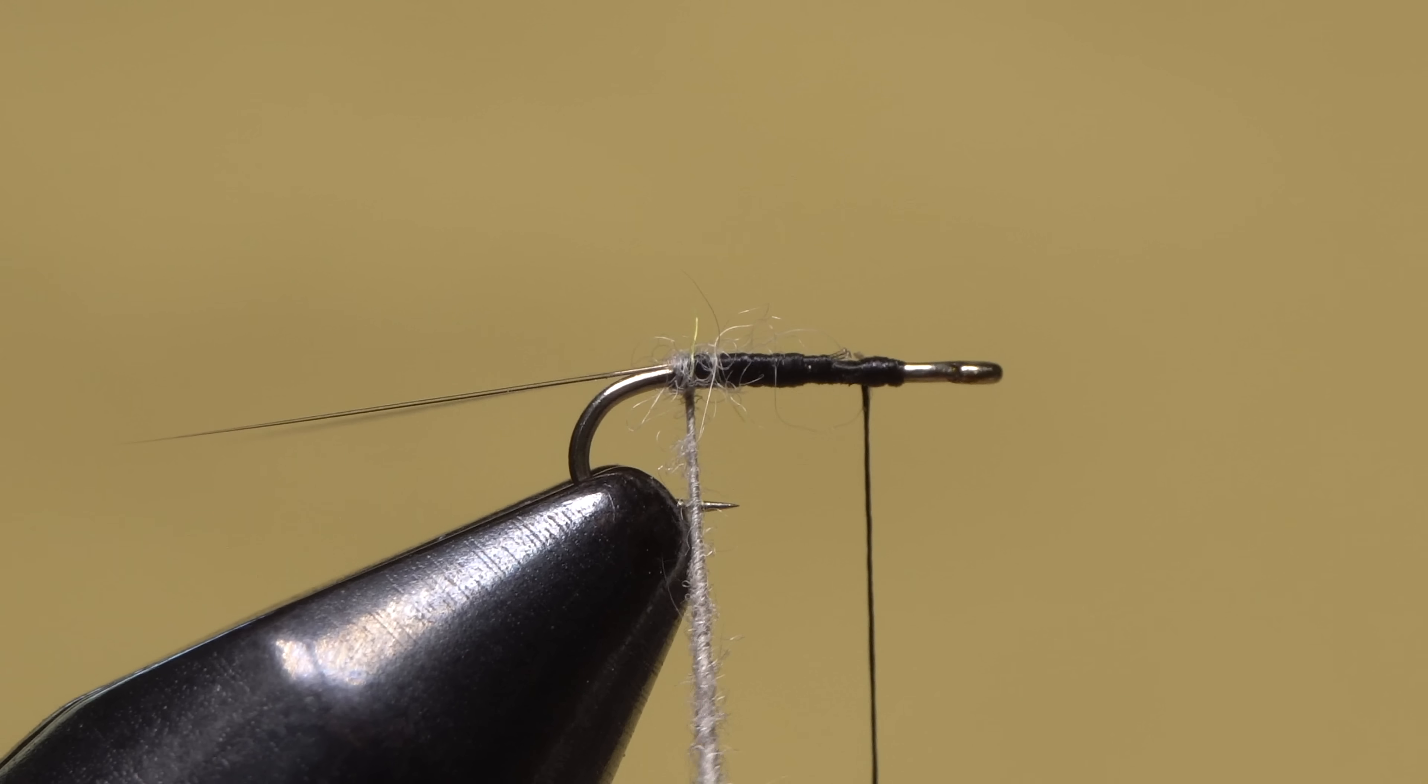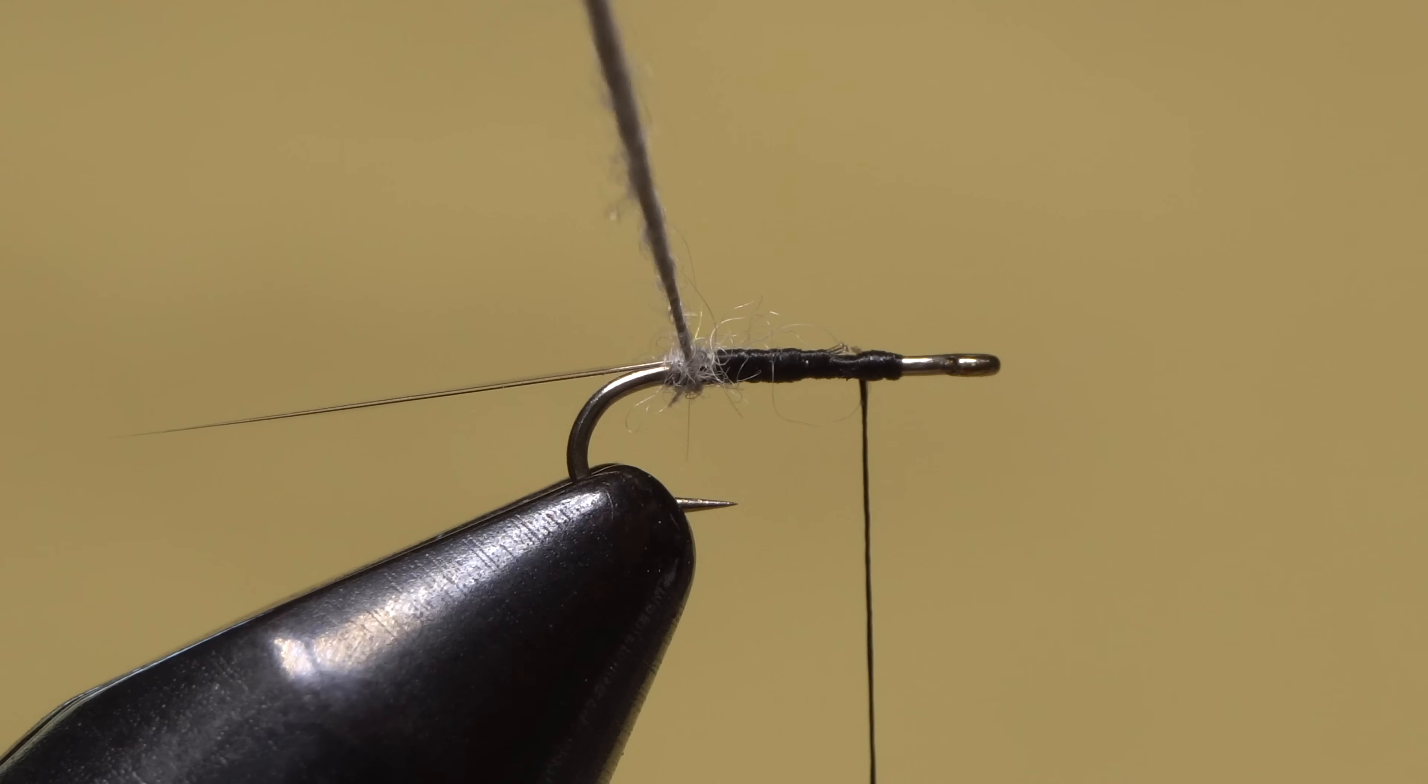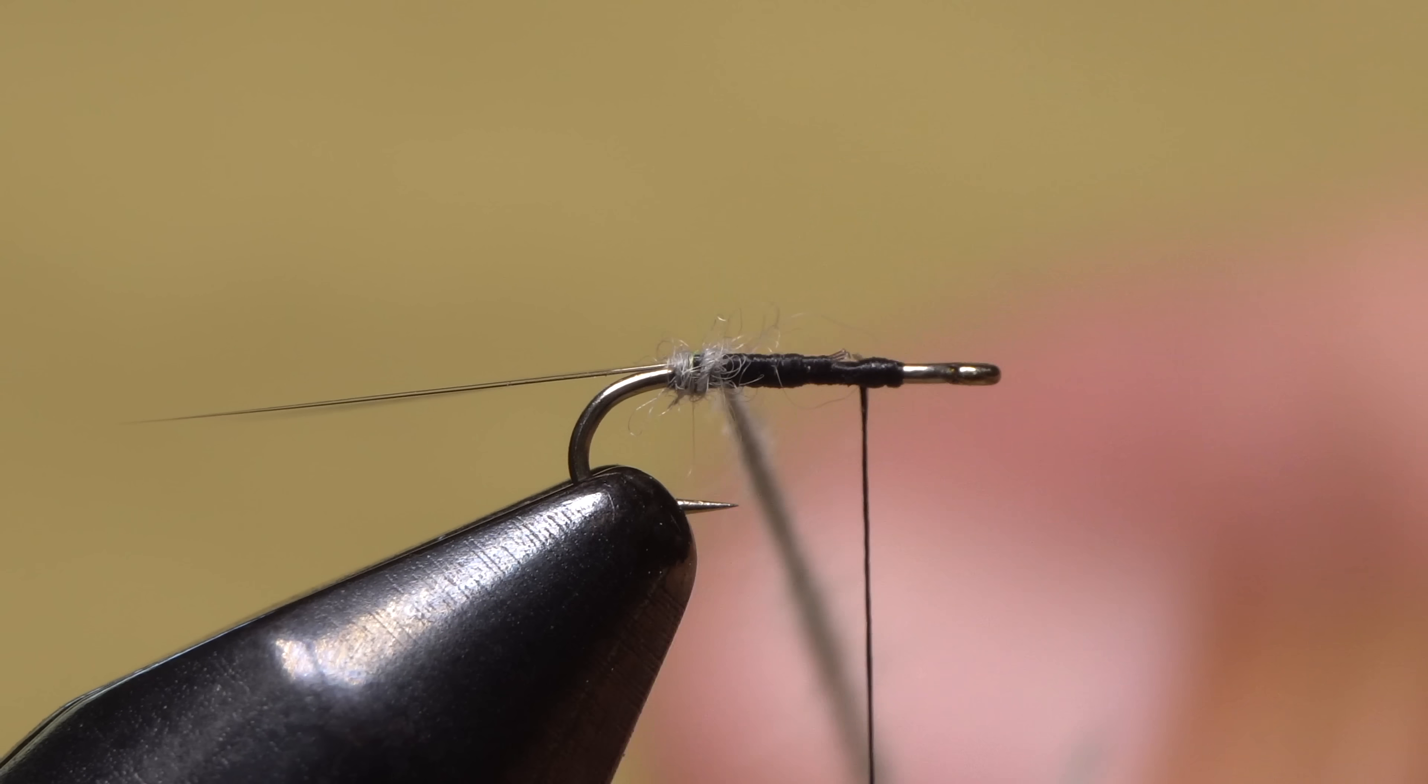As you can see, this will twist the dubbing noodle into a tight little rope. Stop the whorl from spinning and while holding onto the hackle pliers, remove the whorl.